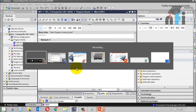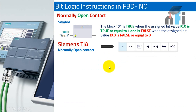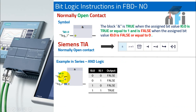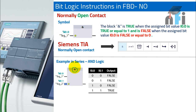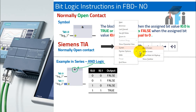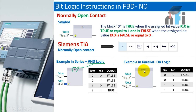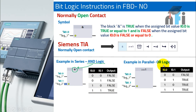This is the FBD logic. The same example of series and parallel — you have two contacts in series, I0.0 and I0.1 — and this is symbolized by the AND gate symbol. The truth table is the same as what we understood before. In parallel, you have the symbol with 'greater than or equal' — two inputs connected in parallel. If the symbol is like this it's an OR logic, and if the symbol is like the AND gate it's AND logic. The truth table is the same as before.